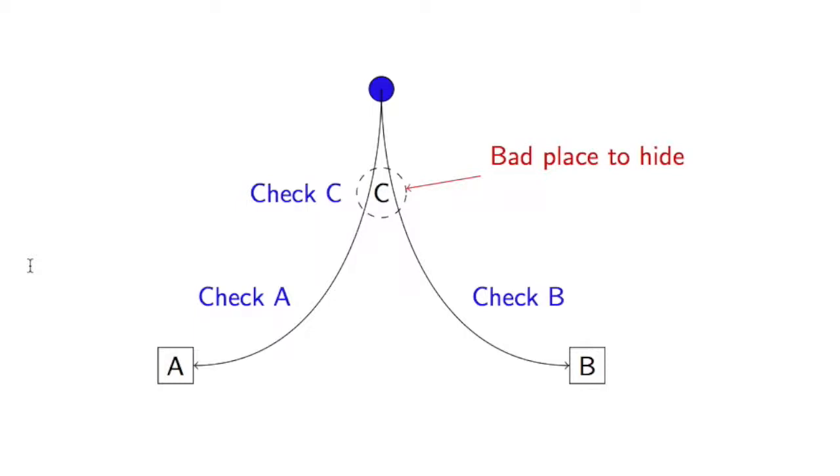So C is actually a terrible place to hide. And if you've ever played hide and seek, you probably never just hide out in the open. So what we do in this game is we just get rid of C. Ben knows he never has to check C because we will never hide in C. And so that strategy is dominated.